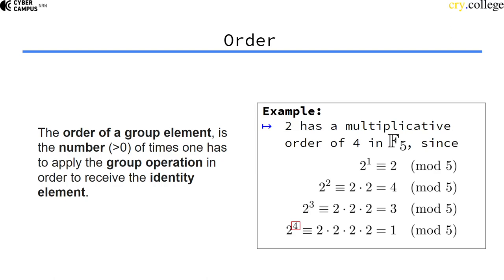In the case of our generator from earlier, 2 has an order of 4. Because if I apply the group operation of multiplication 4 times, I end up at 1.